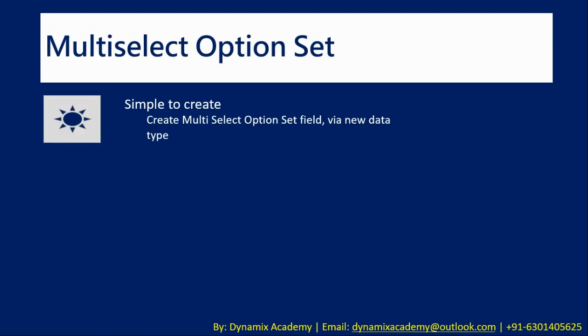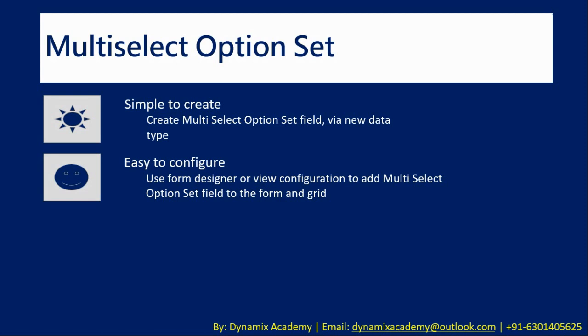Multi-select option set is a new type of field or attribute that you can add to any existing entity or a new custom entity, which is simple to create with the help of the UI designer. It is easy to configure — you can use form designer or view configuration to add the multi-select option set field to the form as well as to the grid. The procedure is the same as creating another field type like option set or two-option set.